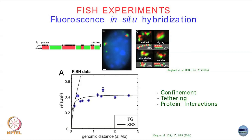Whatever model you build should reproduce this feature — that R² should plateau out after around 1 to 2 megabases.